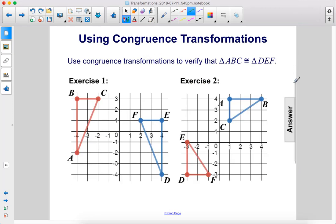Use congruence transformations to verify that triangle ABC is congruent to triangle DEF. Alright, so over here, first we're going to translate this triangle down two units. So it's here, here, and here, like this. And we'll write that translation 0, negative 2, because we just moved two units down.